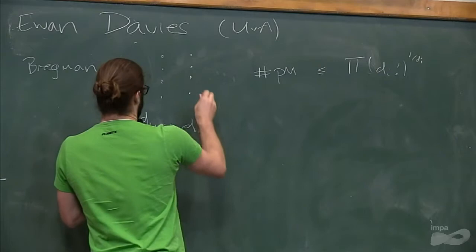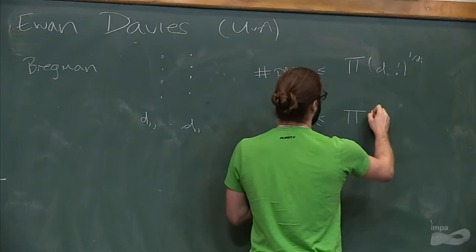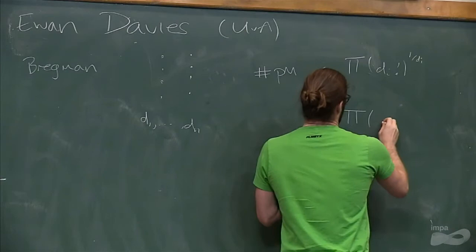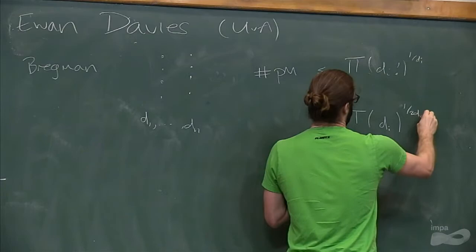So I'm not so interested in bipartite graphs, but this was extended to general graphs by Kahn and Lovász, who didn't publish a proof, but they prove it in a 2N vertex graph where we know the whole degree sequence this time. You get the same product but with a 1/(2Dᵢ) here.